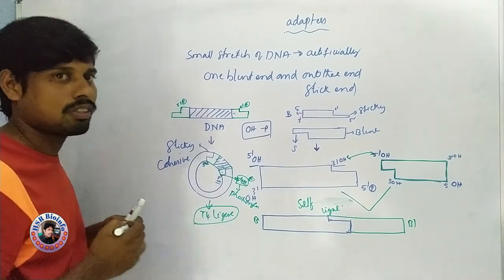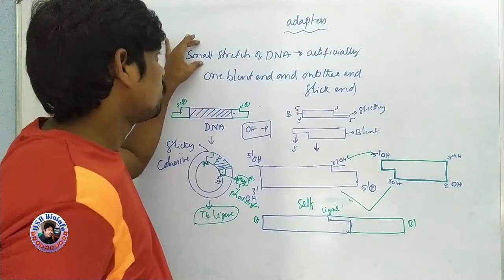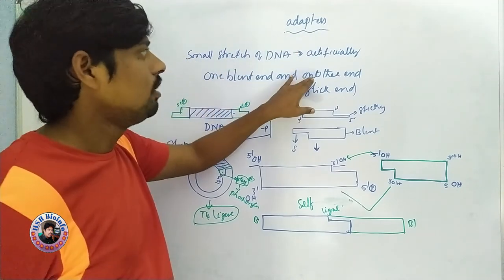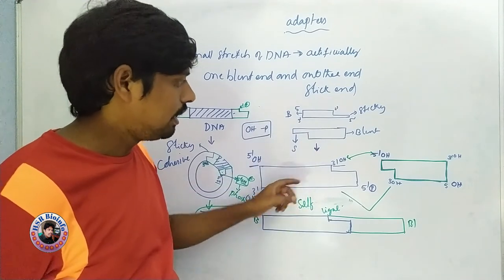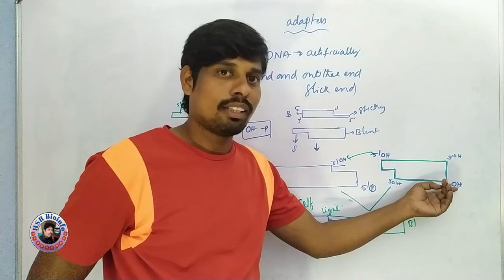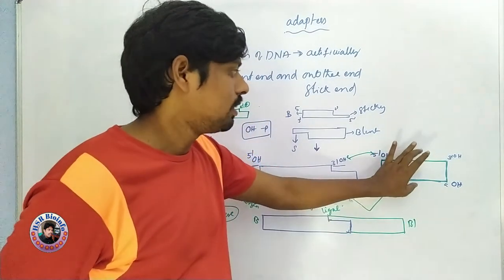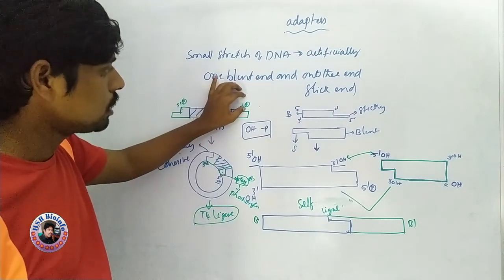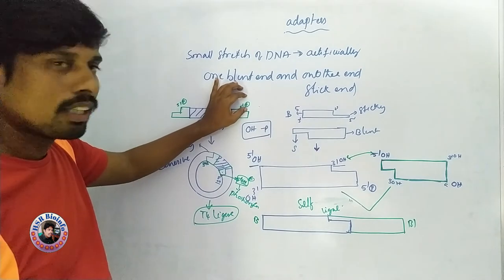This is the adapters, on ATP. The adapter is a small stretch of DNA artificially created in the laboratory. They have one blunt end and one sticky end. To avoid self-ligation, the 5' phosphate end is created with a 5' hydroxyl group instead.